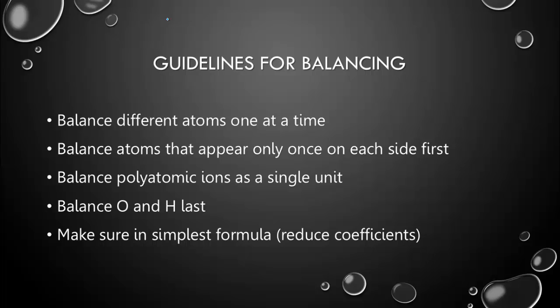Then you're going to balance atoms that appear only once on each side first. Some compounds may have the same elements in them, so we want to look for things that only appear on each side first. Then we have those polyatomic ions. Those are the ones you usually put in parentheses. These are ones you want to balance as a single unit. Don't break them up. Like nitrate, which is NO3, keep it as NO3. Don't break it up into nitrogen and oxygen.